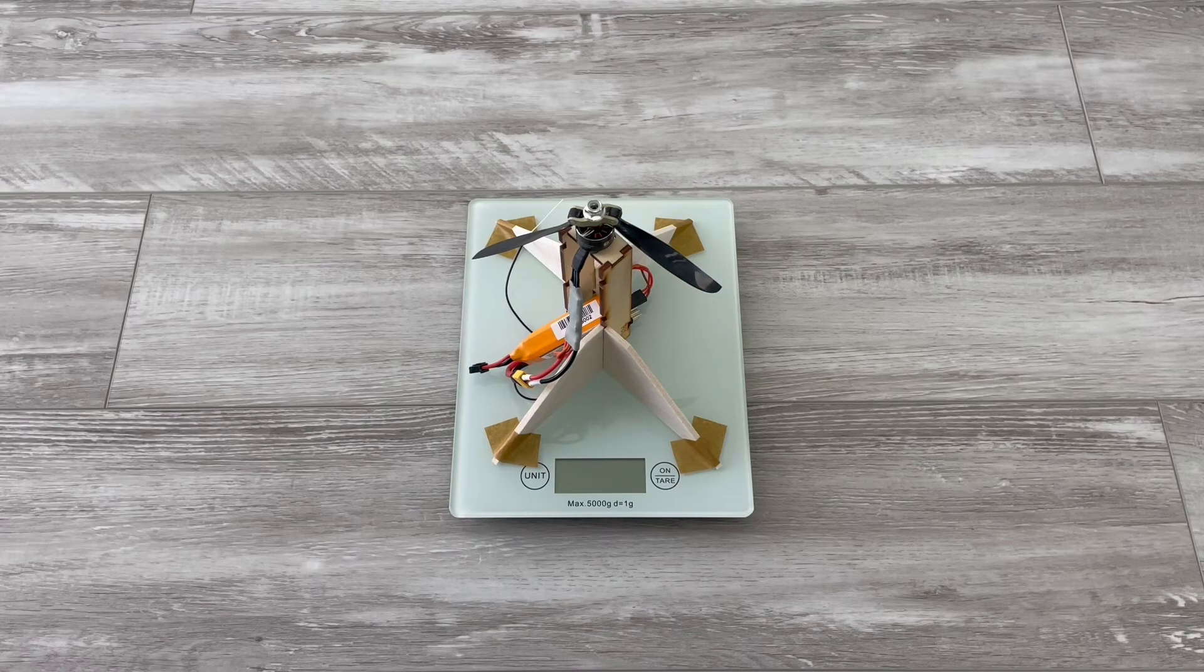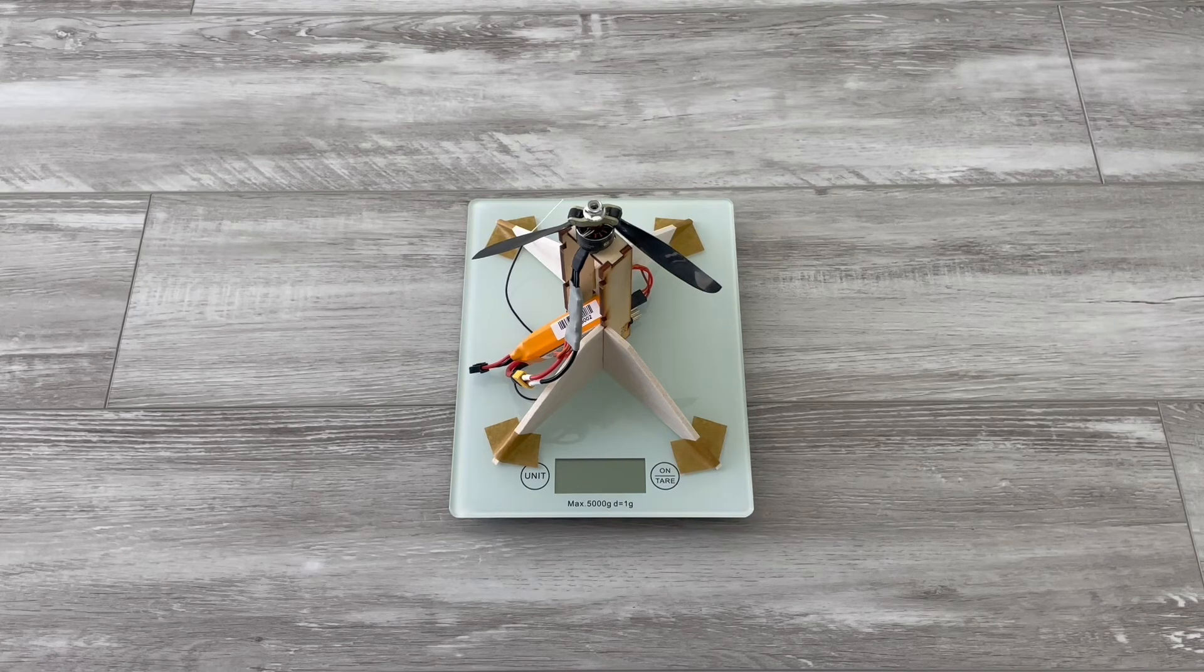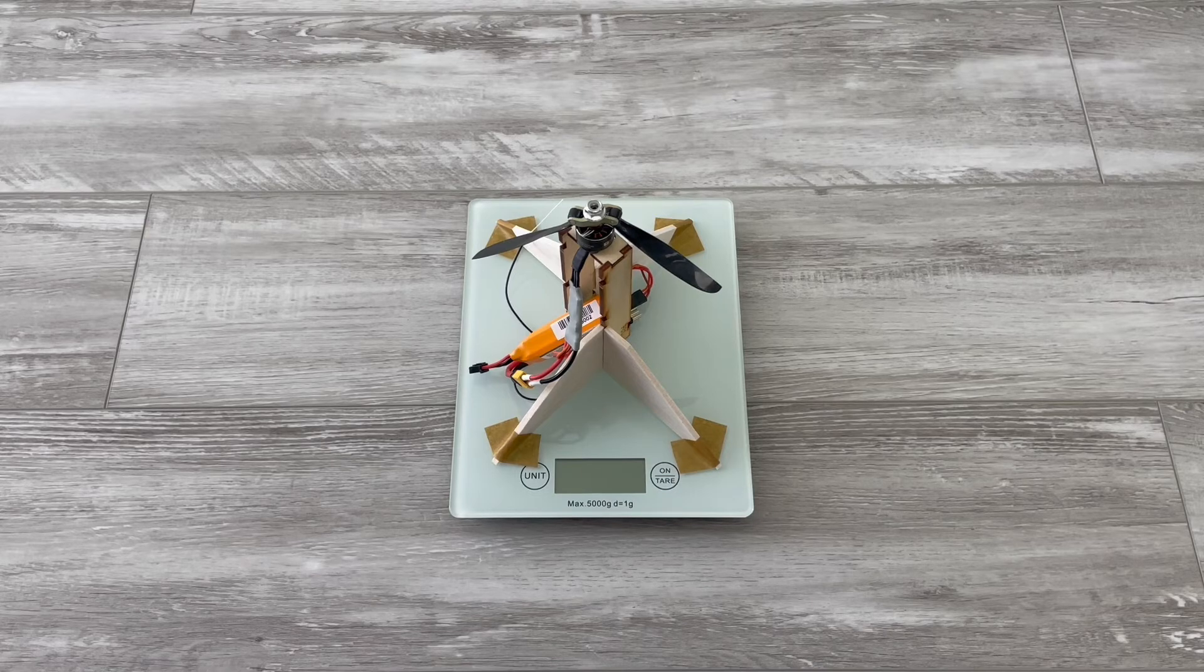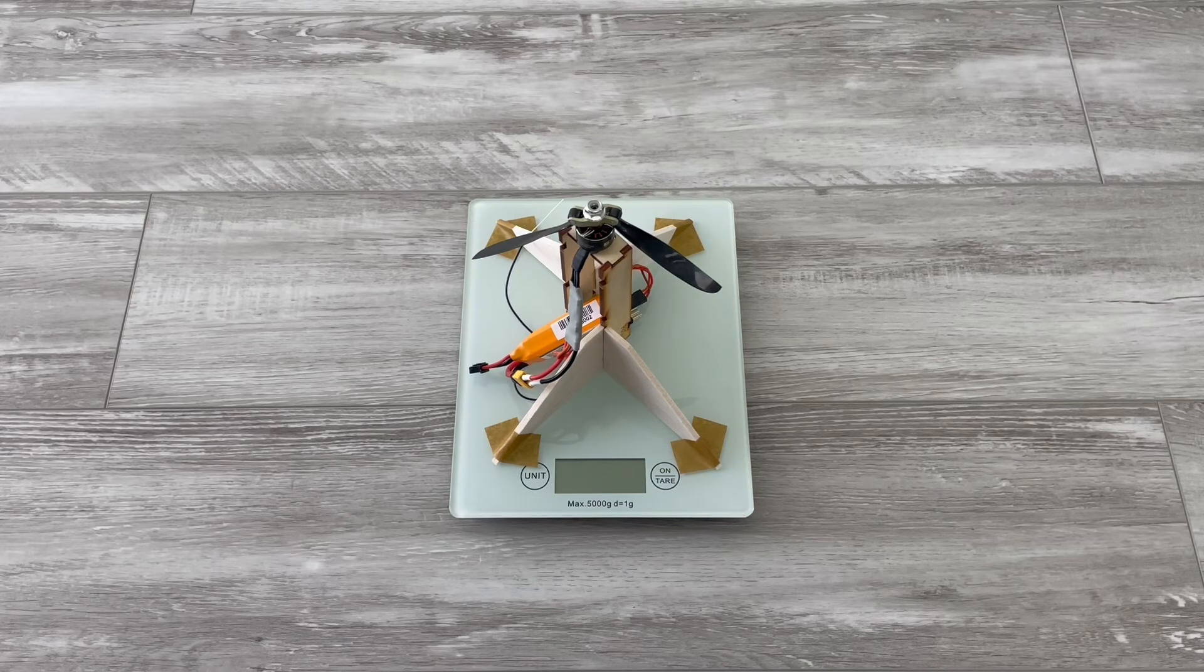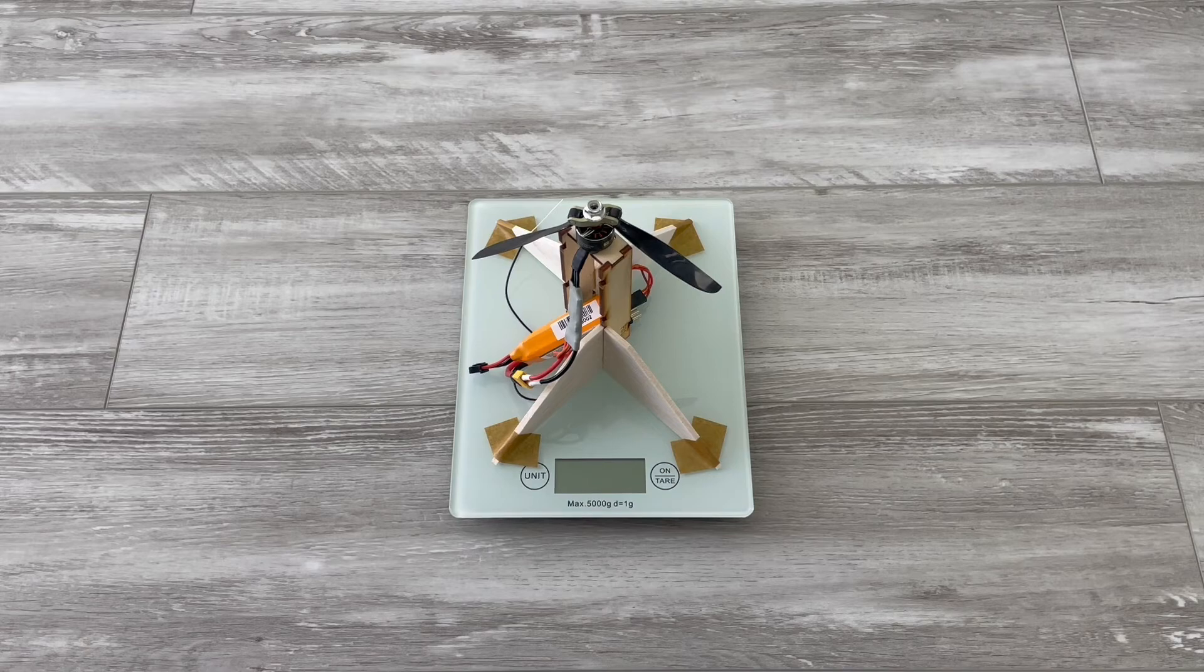And also the higher KV motor, the same T-motor F1507. I think the KV there is 3800, combined with a 6x3 prop.